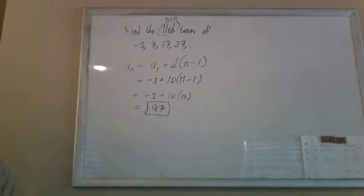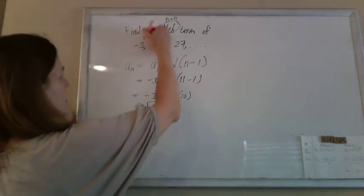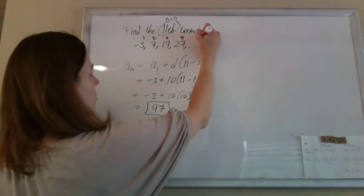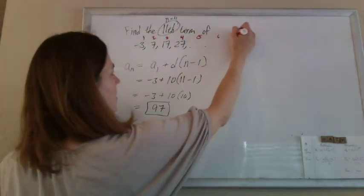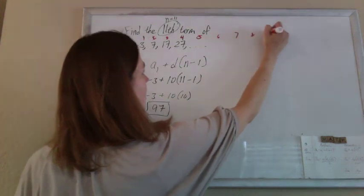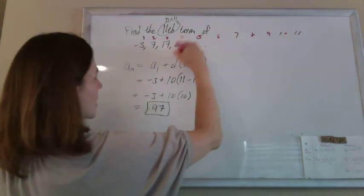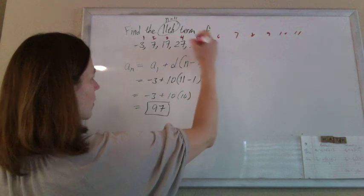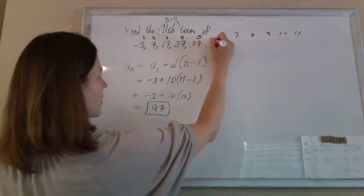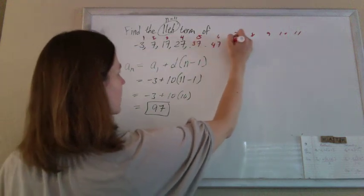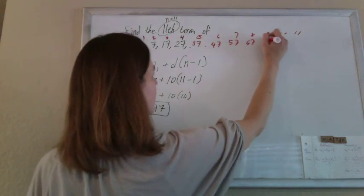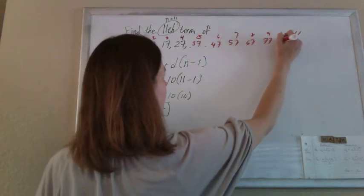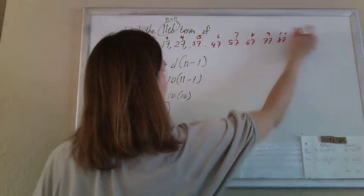Now to check it, just for fun, let's take this out to the 11th term. This is the first term, second, third, fourth, fifth, sixth, seventh, eighth, ninth, tenth, 11th. Keep adding 10: 27, 37, 47, 57, 67, 77, 87, 97. We found it.